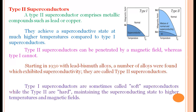In type 1 superconductors, there is only one critical magnetic field, Hc. Below that critical magnetic field, the conductor changes into a superconductor. If the magnetic field exceeds the critical value, the superconductor changes into a normal conductor. But in type 2 superconductors, there are two critical magnetic fields: Hc1 and Hc2. Between these two values, there is a mixture of normal and superconducting states.